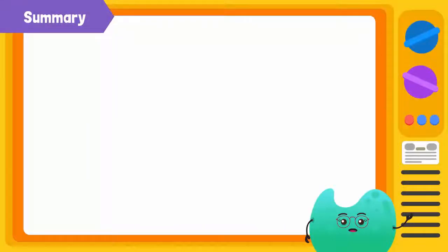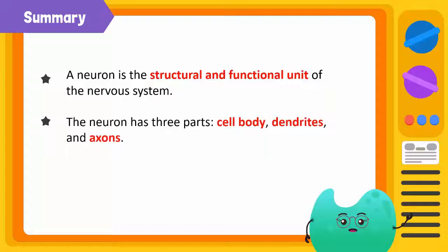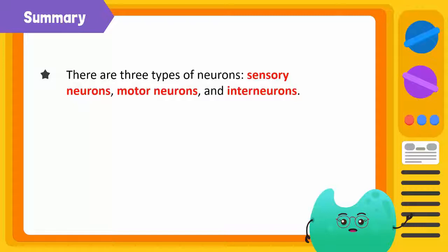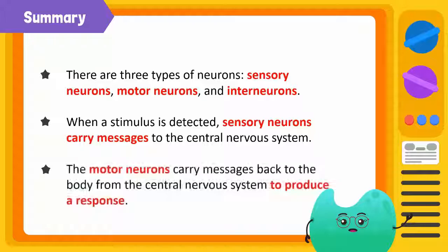To summarize, a neuron is the structural and functional unit of the nervous system. The neuron has three parts: cell body, dendrites, and axons. Dendrites receive messages while axons transmit messages. There are three types of neurons: sensory neurons, motor neurons, and interneurons. When a stimulus is detected, sensory neurons carry messages to the central nervous system. The motor neurons carry messages back from the central nervous system to the body to produce a response.